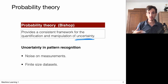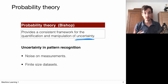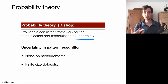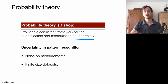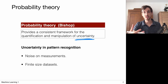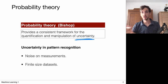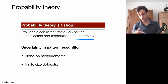This uncertainty aspect plays a central role all throughout this course and in machine learning in general. In this machine learning context, we have to deal with uncertainty in various ways. First of all, we have to deal with uncertainty in measurements, because there is noise on measurements.